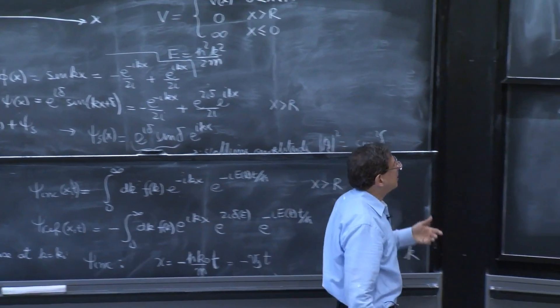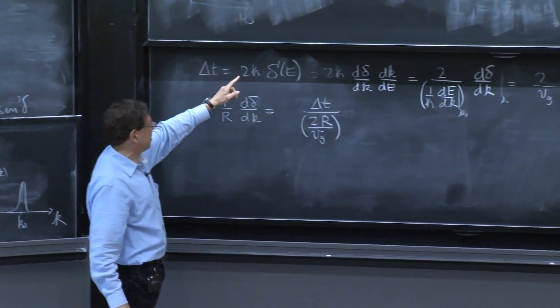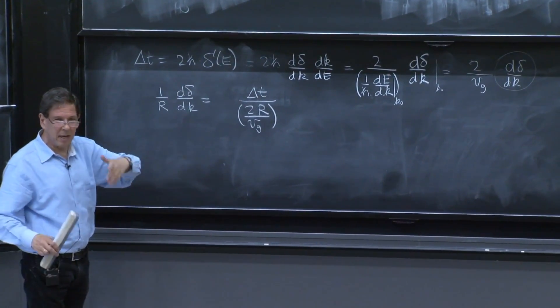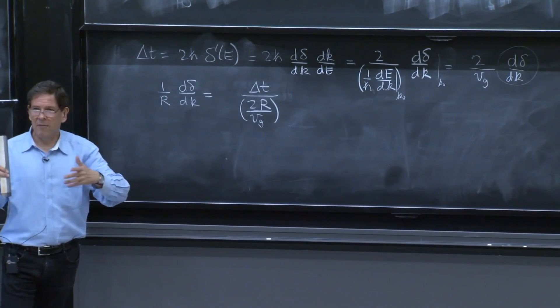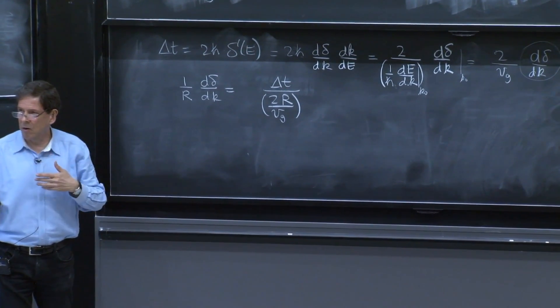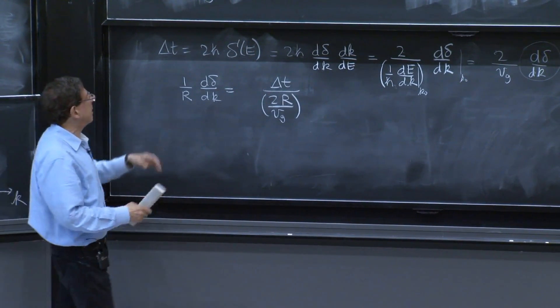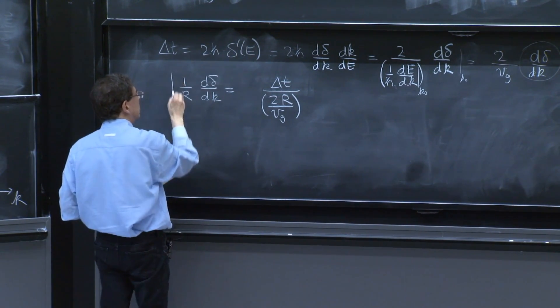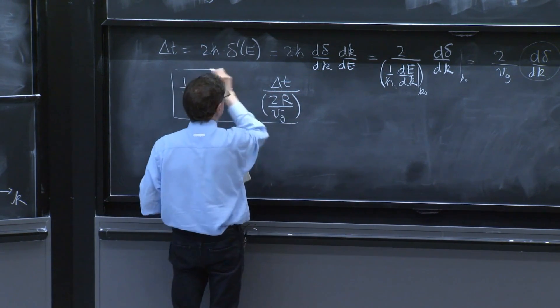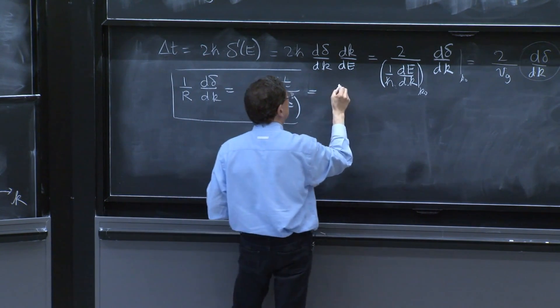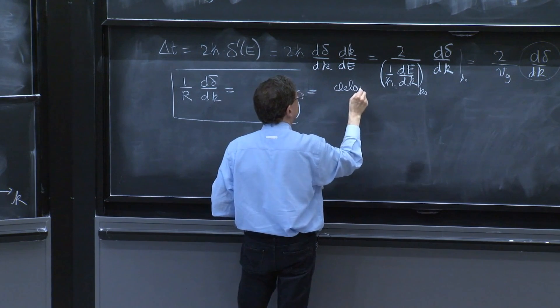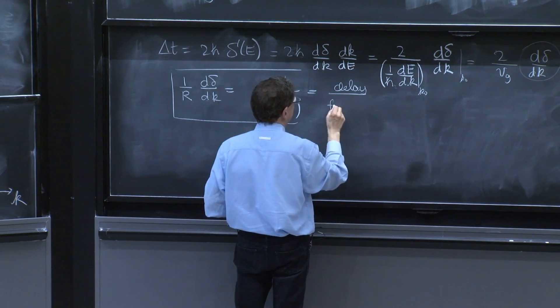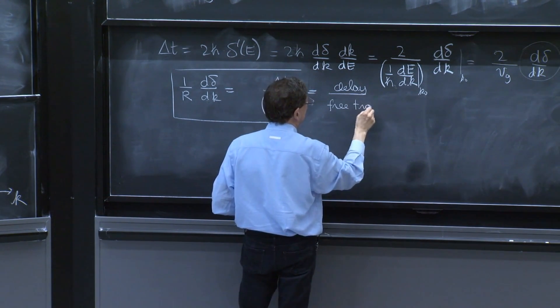So if you compute the time delay, again, it will have units of microseconds. And you may not know if that's little or much. But here, by computing this quantity, not exactly delta prime of e, but this quantity, you get an insight because this is the delay divided by the free transit time.